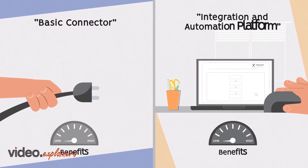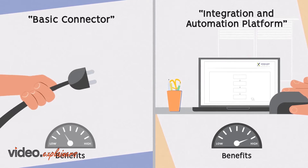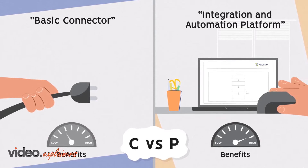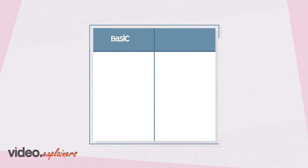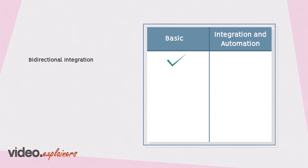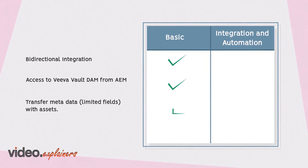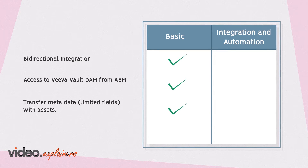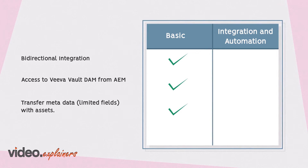The difference between these two solutions is significant, and the benefits are much higher with a platform. The connector solves a few basic use cases, but the platform automates critical and manual processes, enabling more benefits. The connector can move assets and their metadata between DAMs, and allows you to send an MLR package directly to Promomats. It can automatically send approved content from Viva to Adobe DAM, and allows either Adobe or Viva as the single source of truth.